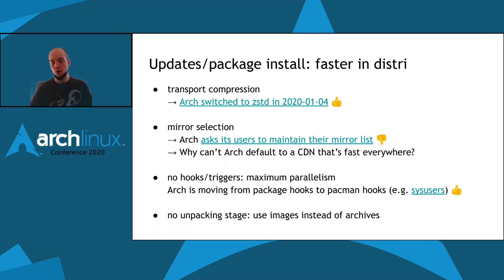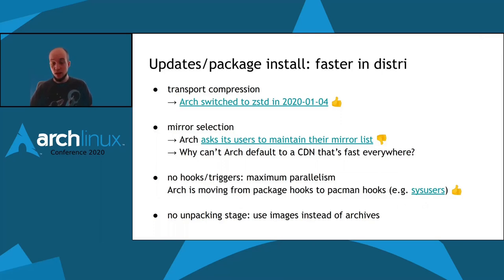In DISTRI there are no hooks or triggers at all, which not only allows DISTRI to download packages using maximum parallelism but also to install packages using maximum parallelism. In Arch it seems we have neither — maximum parallelism during downloading might be better in the Git version but it's not yet released. DISTRI can also do maximum parallelism at installation time because there are no package-specific hooks and triggers. Arch is moving from package hooks to pacman-level hooks, for example for sys users, and that's certainly a step in the right direction.